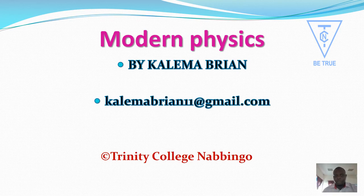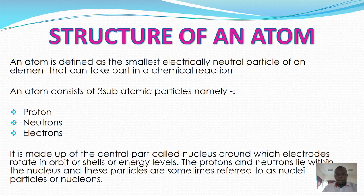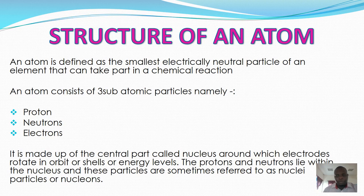Hello dear students, we are going to have a lesson in modern physics and we're going to look at the structure of an atom. An atom is the smallest electrically neutral particle of an element that can take part in a chemical reaction. An atom consists of three subatomic particles: protons, neutrons, and electrons, where electrons orbit around the nucleus and protons and neutrons are inside the nucleus.